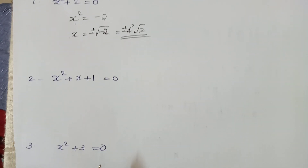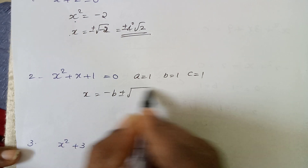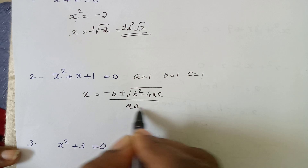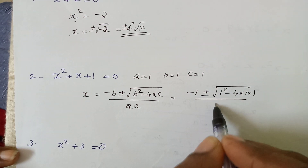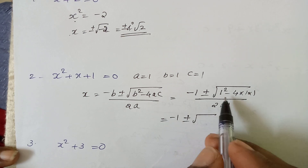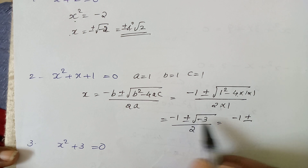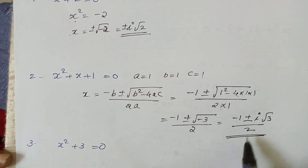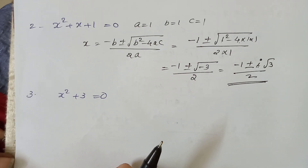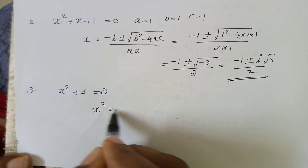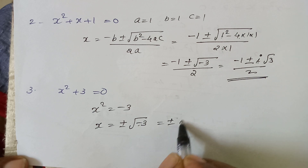Now for the equation x squared plus x plus 1 equals 0, we have a equal to 1, b equal to 1, c equal to 1. Using the quadratic formula: x equals minus 1 plus or minus root of 1 squared minus 4 into 1 into 1, divided by 2 into 1. That gives minus 1 plus or minus root of 1 minus 4, which is minus 1 plus or minus root of minus 3, divided by 2. Since root of minus 3 equals i root 3, when x squared equals minus 3, x equals plus or minus root of minus 3, that is i root 3.